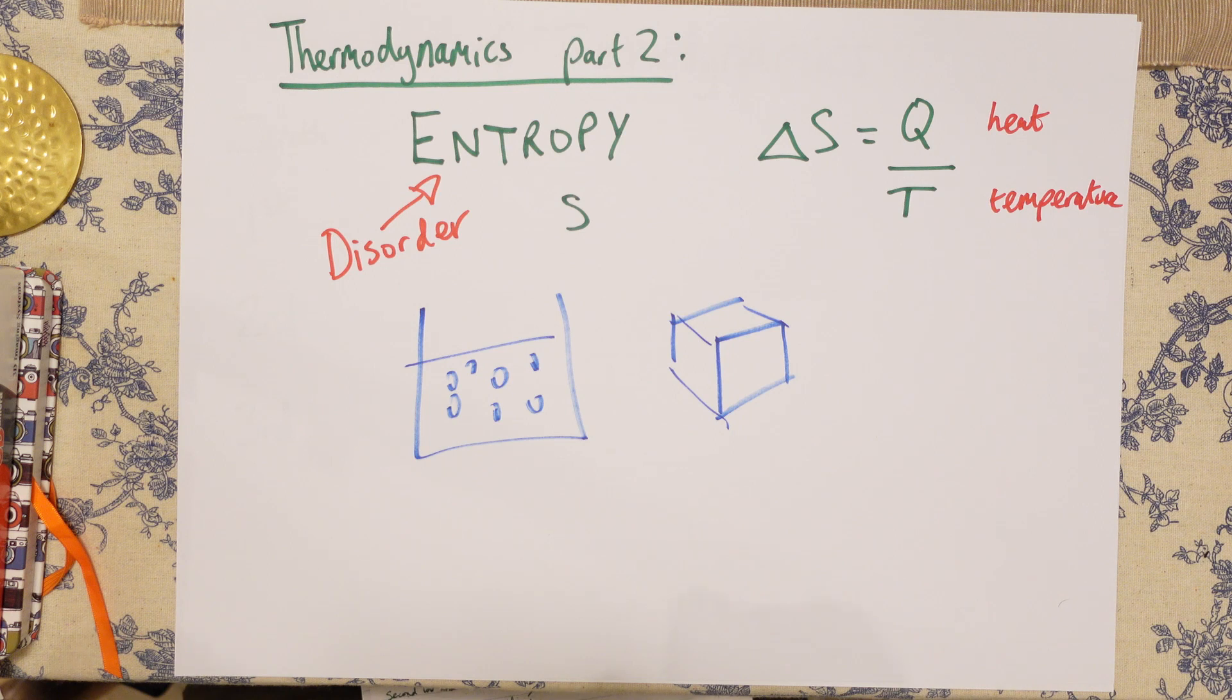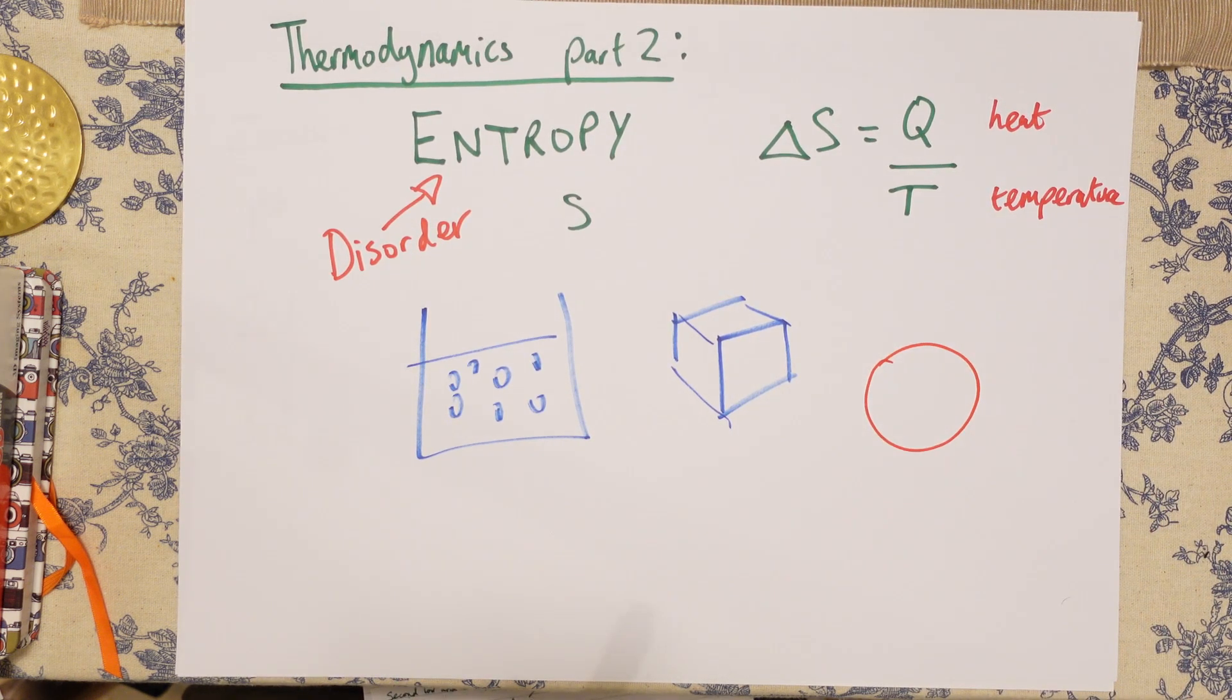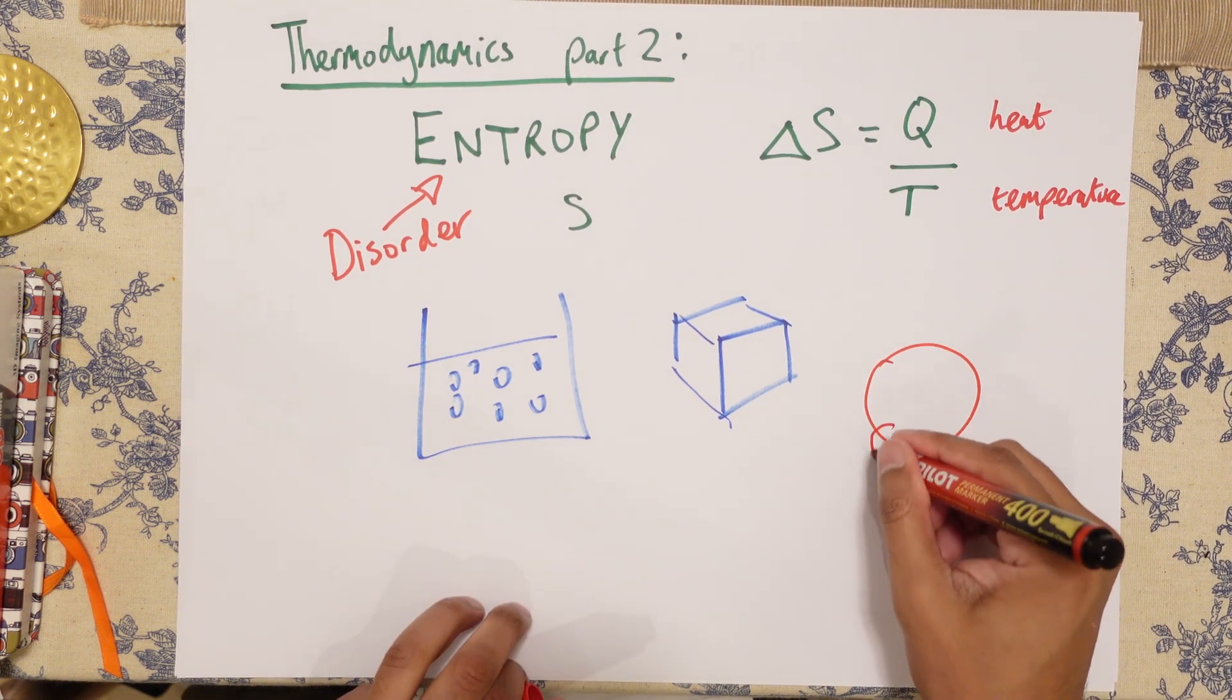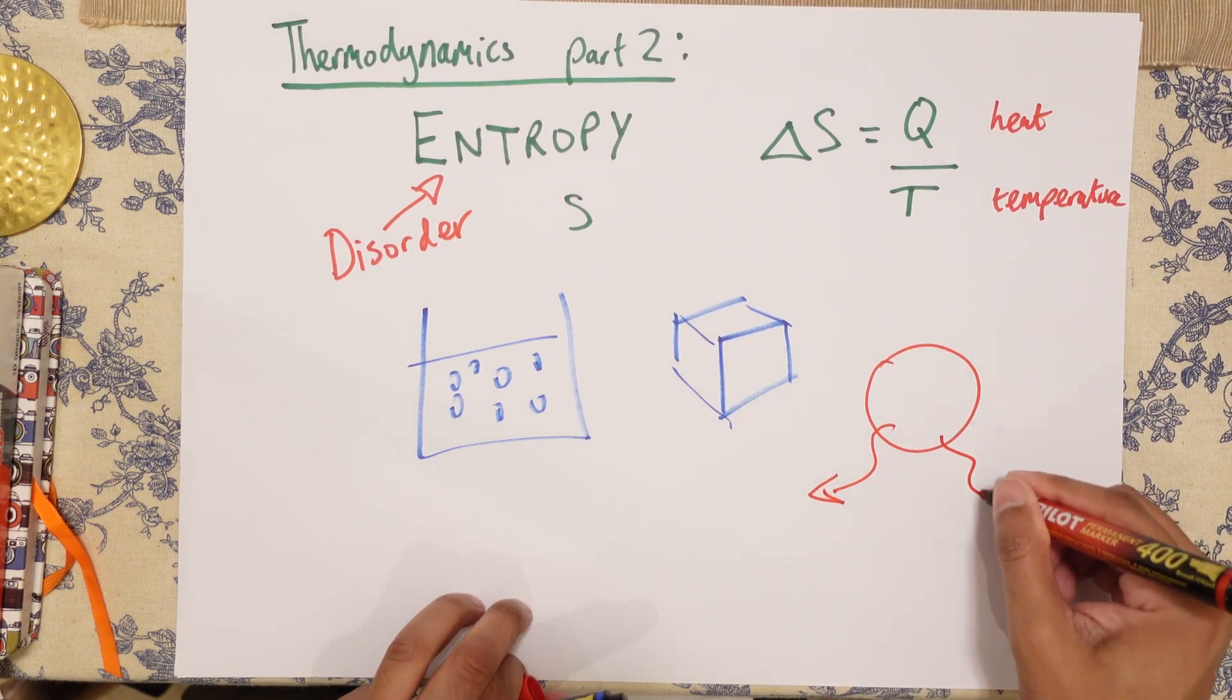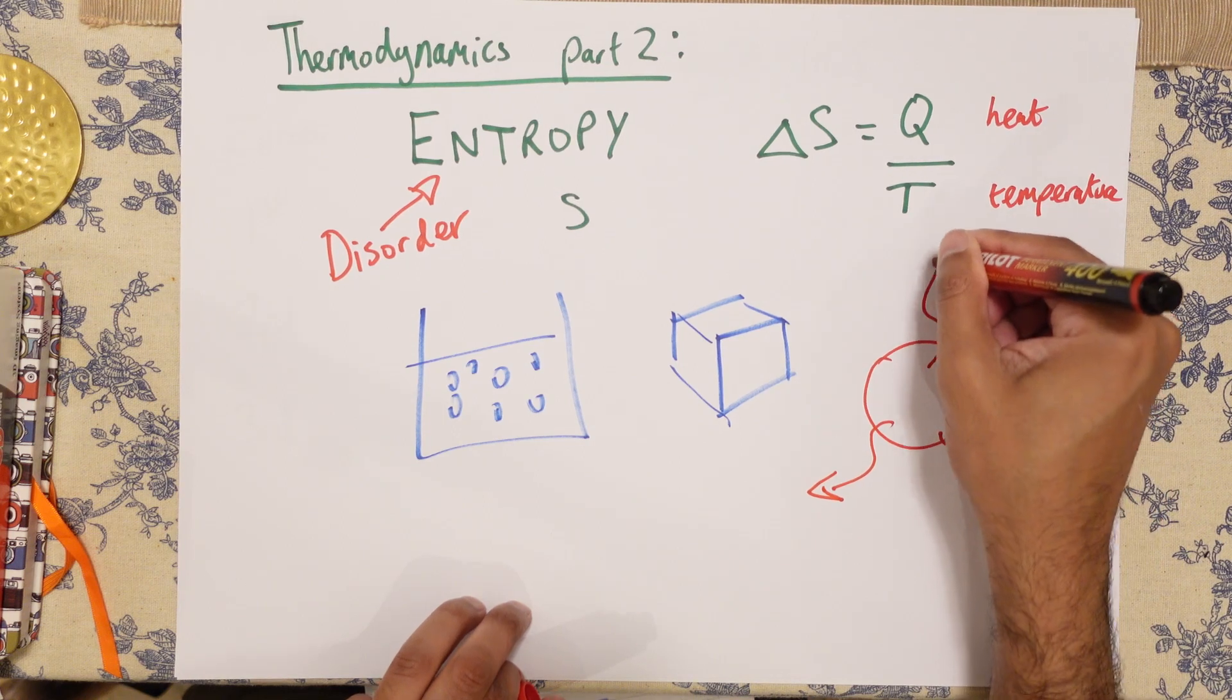Now why is that? Well, you may have heard of this thing called the heat death of the universe. That hasn't happened yet and maybe it won't happen for a long time. But suppose you've got a star—over time, what's going to happen is it's going to radiate all that heat away.